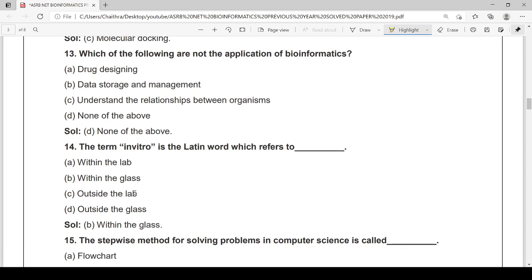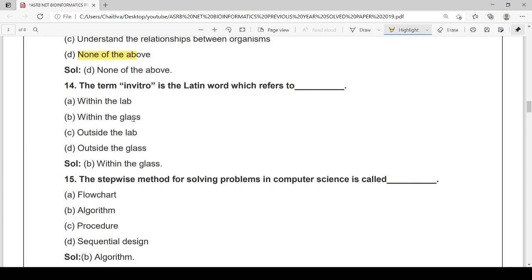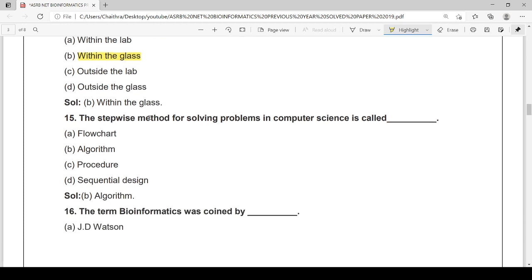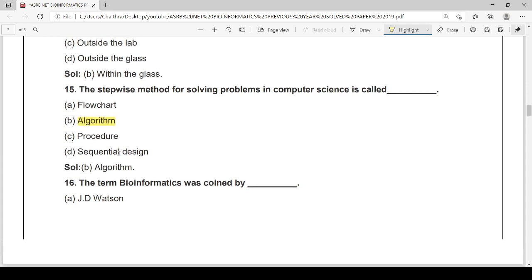Which of the following are not the application of bioinformatics? It is none of the above. Everything is bioinformatics application: drug designing, data storage management, understanding the relation between organisms. The term in vitro, the Latin word which refers to within the glass, within the four walls. The step-wise method for solving problems in computer science is algorithm, option B.